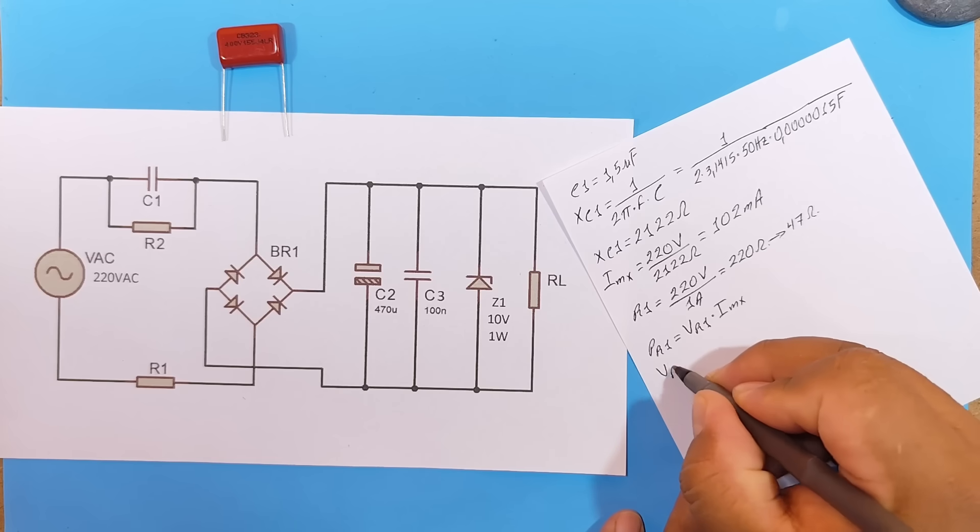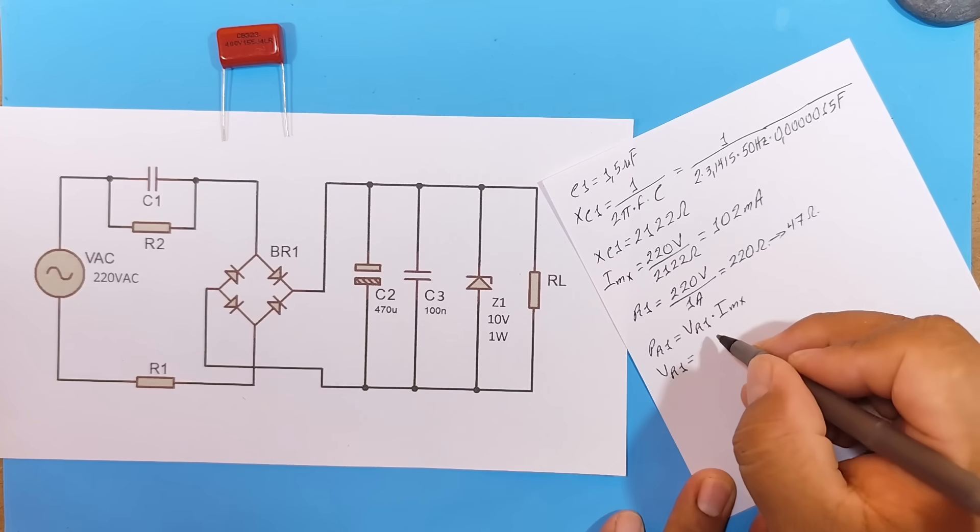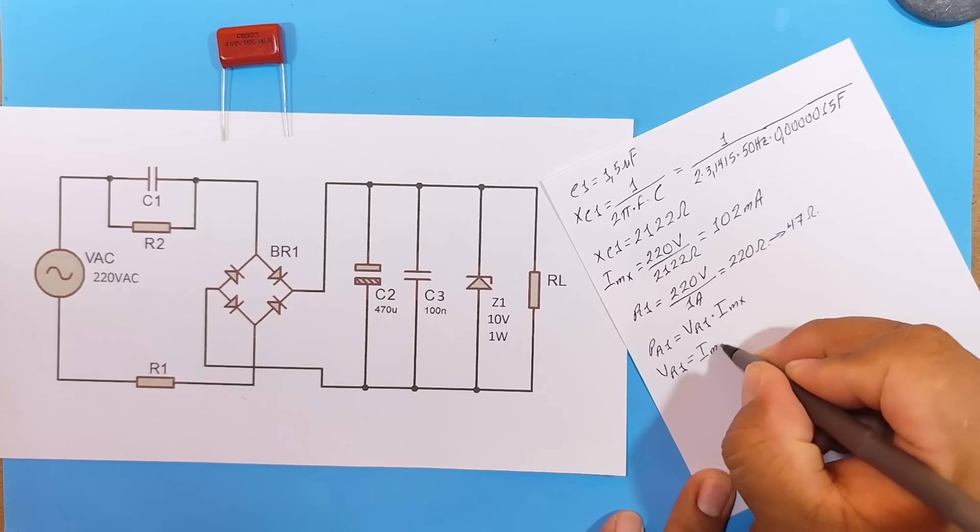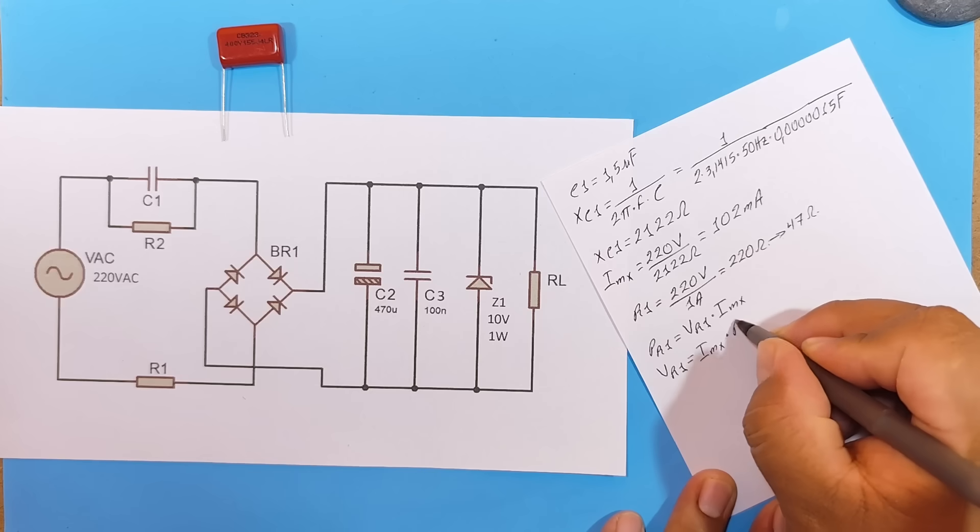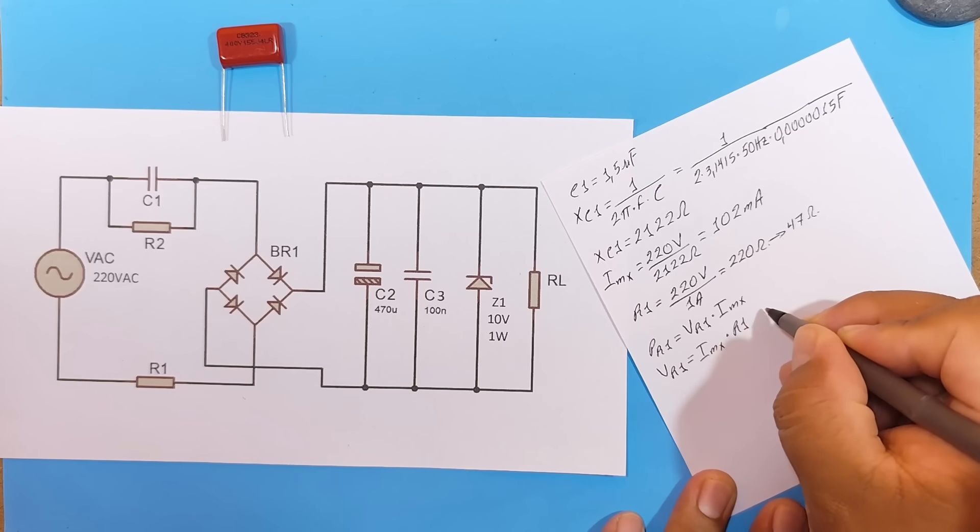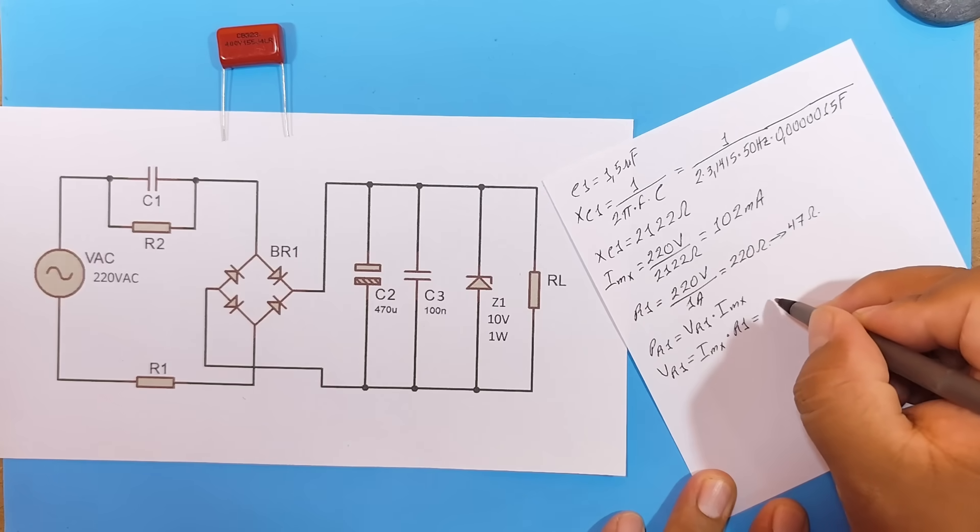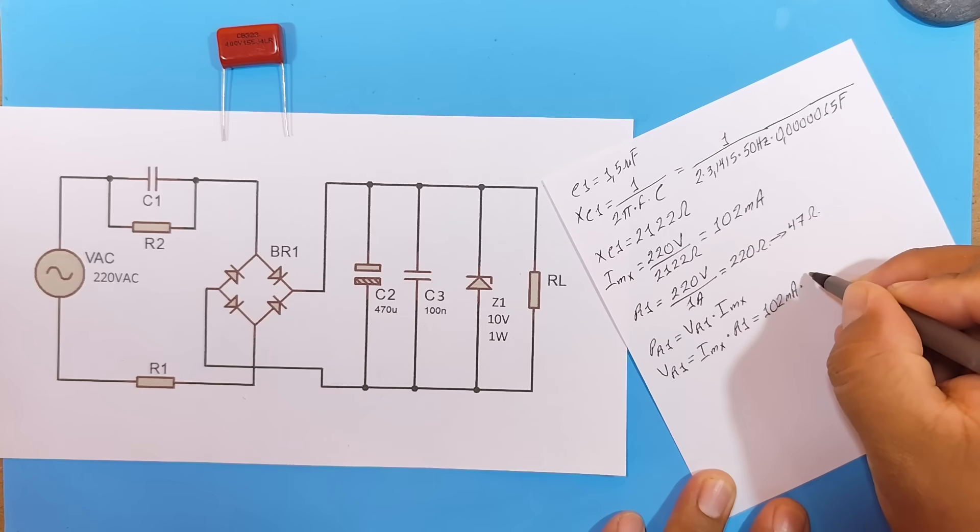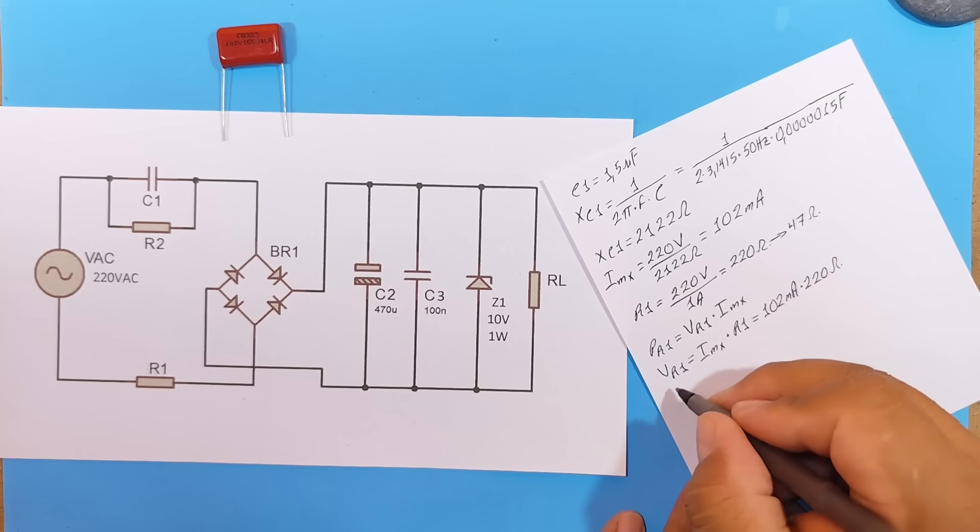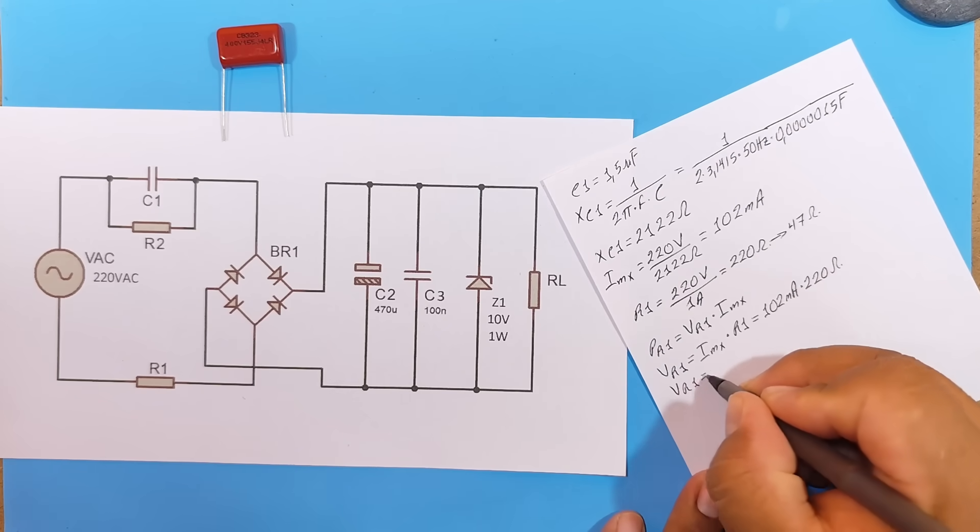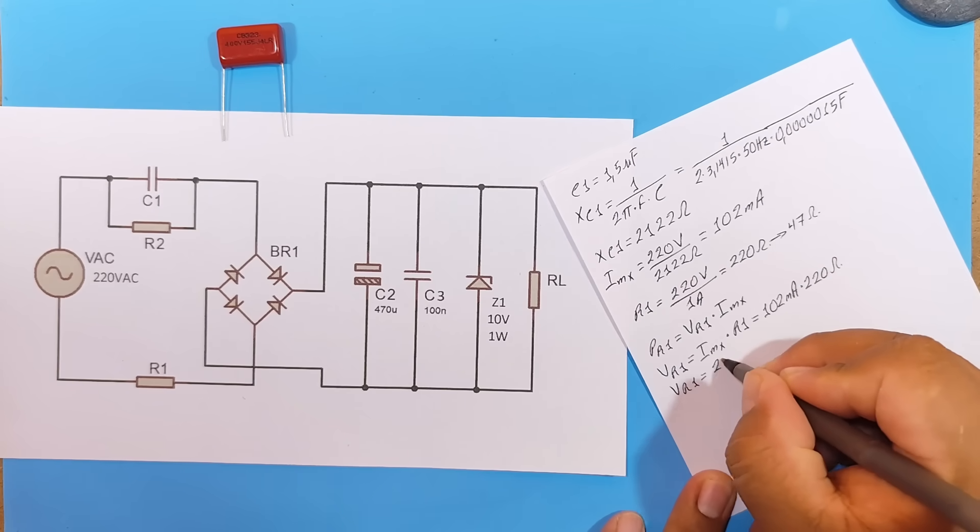However, we don't have the voltage, so the voltage across R1 will be equal to the maximum current passing through R1 times the value of R1. Therefore, this will be equal to 102 milliamps times 220 ohms. Therefore, the voltage across R1 will be equal to 22.4 volts.